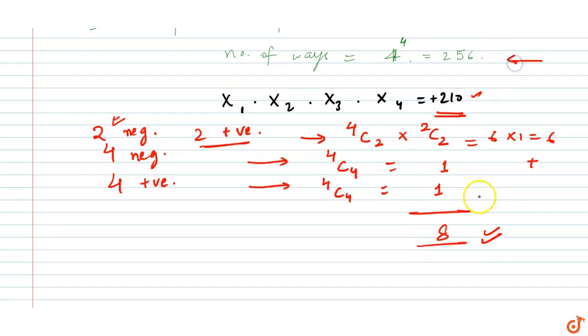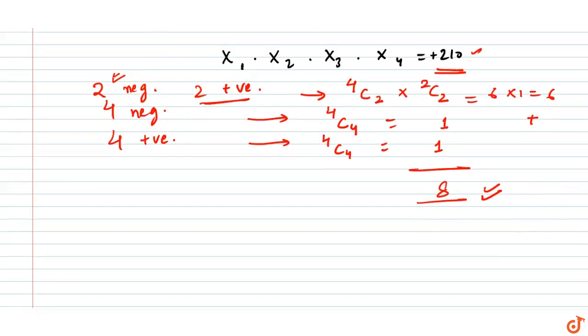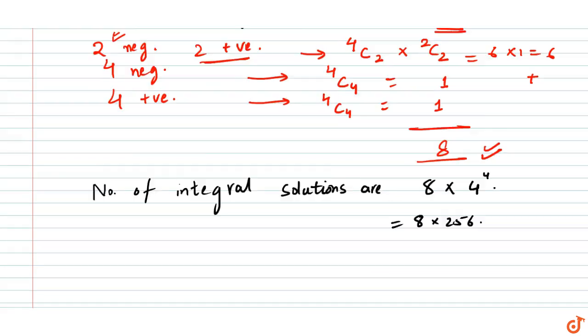So 8 cases you need to consider for this arrangement of 4 to the power 4. So the number of integral solutions are 8 × 4^4, which is 256. So 8 × 256, and 256 × 8 = 2048. So this is the final answer, the number of integral solutions for x1 × x2 × x3 × x4 = 210.